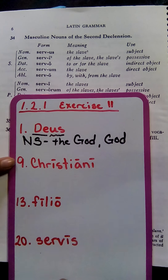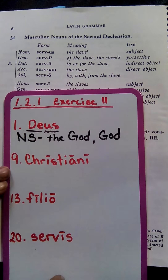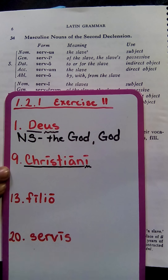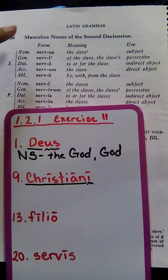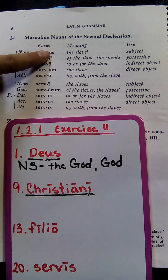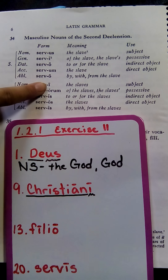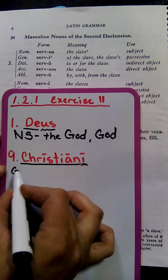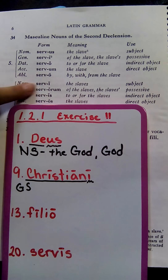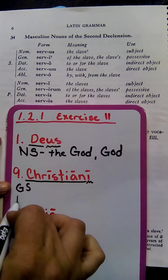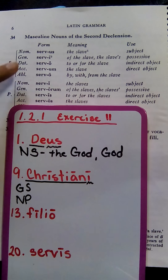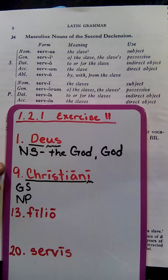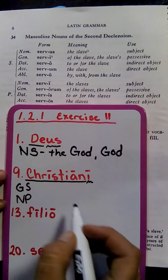Number 9 gives us "christiani." "Christiani" has the stem of "christian" and our ending is long ī. We'll look to Grammar Rule 34 again, and we see that the long ī is found in two places: the genitive singular and the nominative plural.